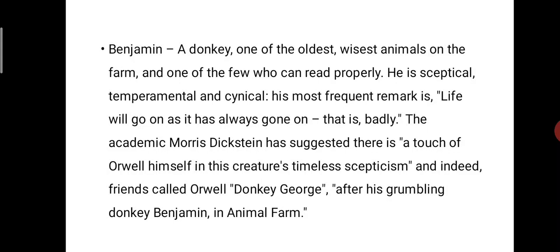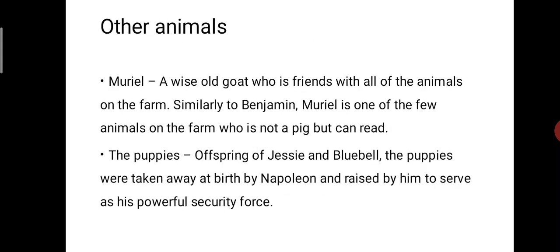Benjamin is a donkey, one of the oldest and wisest animals on the farm and one of the few who can read properly. He is skeptical, temperamental, and cynical. His most frequent remark is 'Life will go on as it has always gone on — that is, badly.' The academic Maurice Decker-Stein has suggested there is a touch of Orwell himself in this creature's timeless skepticism, and indeed friends called Orwell 'Donkey George' after his grumbling donkey Benjamin.